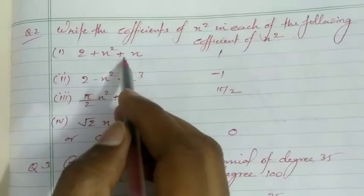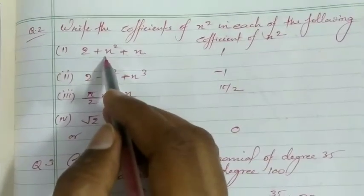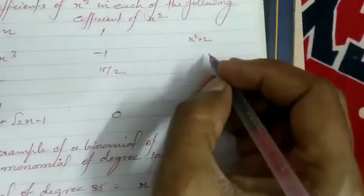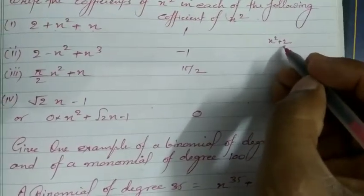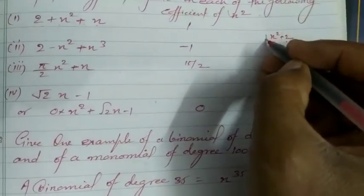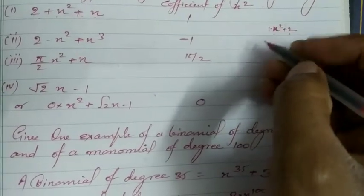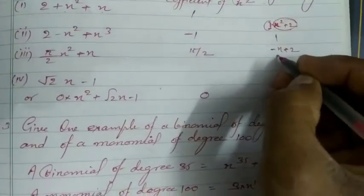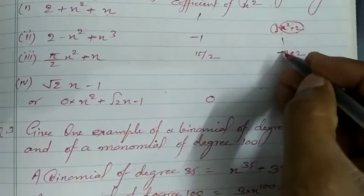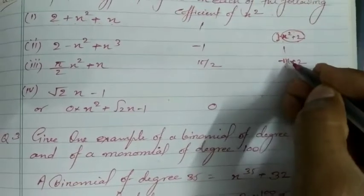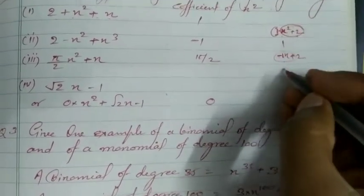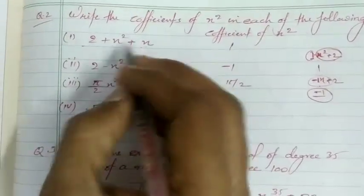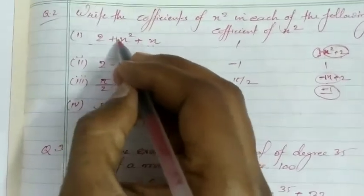Question 2: Write the coefficient of x² in each of the following. First case: 2 + x² + x. The coefficient is the value multiplied by x². For example, in x² + 2, the coefficient of x² is 1. In −x + 2, the coefficient of x is −1 because −1 is the multiplier of x. So in the given polynomial 2 + x² + x, the coefficient of x² is 1.